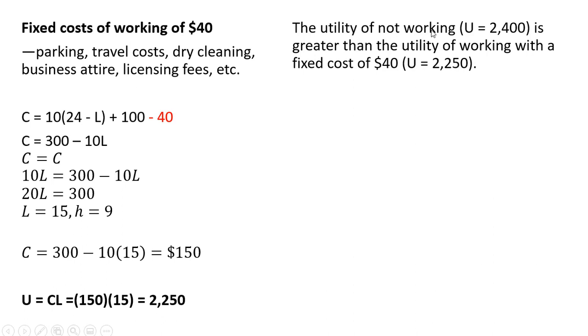So notice, however, that the utility of not working, which we solved for earlier, was $2,400, which is greater than the utility of working with a fixed cost of $40. So in this case, the person will not work. If the fixed costs of working get too large, the person may drop out of the labor market. Hours of work in this case fall to zero. All right, that's it.